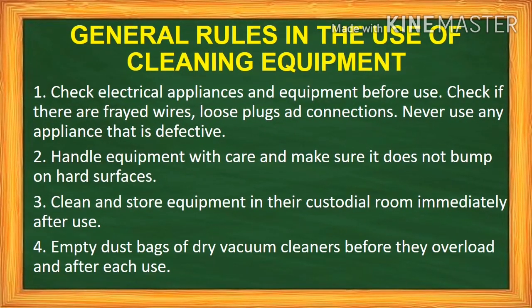Now let's proceed to general rules in the use of cleaning equipment. Number one, check electrical appliances and equipment before use — check for frayed wires, loose plugs, and connections. Never use any appliance that is defective. If you see a cut on the insulator of a wire, you can cover it with electrical tape. But if the appliance is already defective, please don't use it. Number two, handle equipment with care and make sure it does not bump on hard surfaces — friction might create heat or cause fire. Number three, clean and store equipment in their custodial room immediately after use.